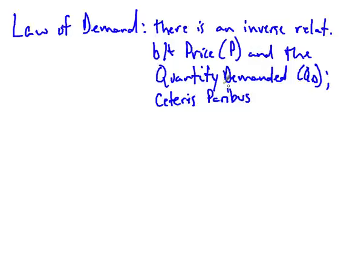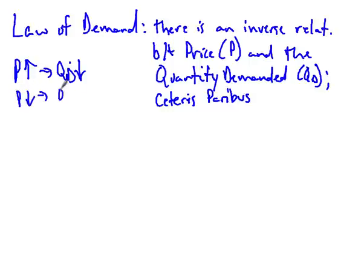In plain terms, the law of demand says that if the price of a product goes up, the quantity demanded is going to go down. Conversely, if the price goes down, the quantity demanded goes up. There's this inverse relationship between price and quantity demanded. Make sure you can state clearly what the law of demand is and include the ceteris paribus qualifier.